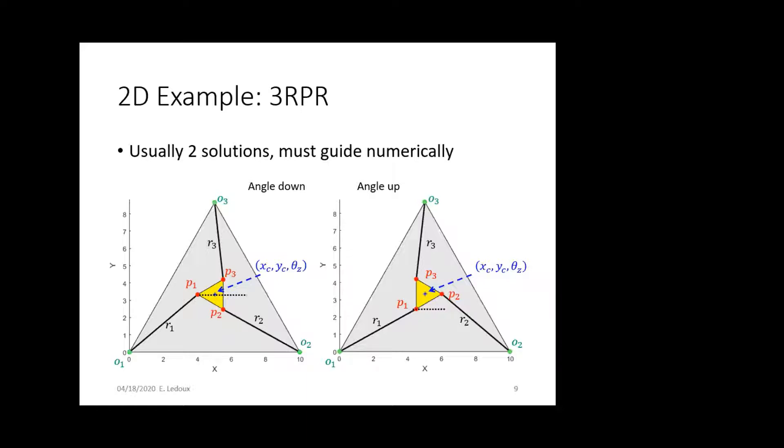Although, typically, with a parallel robot, you don't need to know the forward kinematics as badly as you need to know the inverse kinematics, because generally, you want this end effector to be in a certain spot. And so then you just have to calculate what your joint lengths need to be.